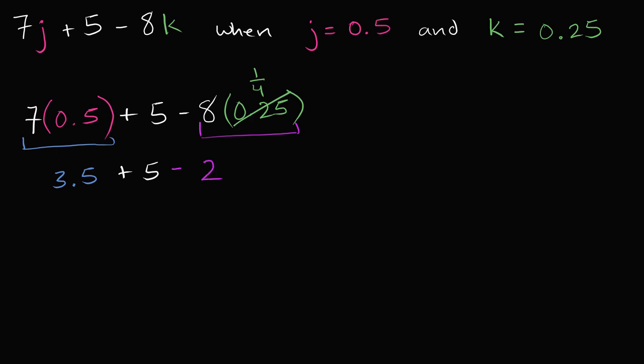And what is this going to be? Let's think about it. 3.5 plus 5 is 8.5 minus 2 is going to be 6.5. So this is equal to 6.5.